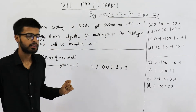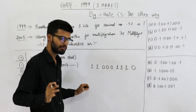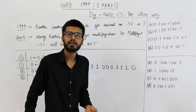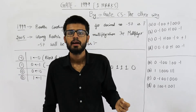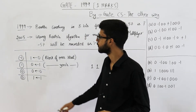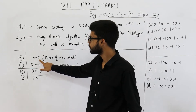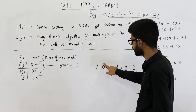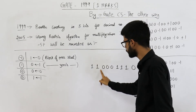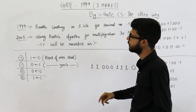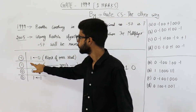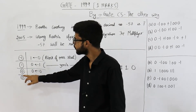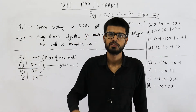Now we need to find the Booth's encoding of this multiplier, which is minus 57. For finding Booth's encoding, you just add a 0 on the right. Now, whenever a block of 1's begins, the encoding will be minus 1, and whenever a block of 0's begins, the encoding will be plus 1. If you are currently on 0 and the next bit is 1, we can be sure that a block of 1's is beginning. You output minus 1 for a block of 1's, and plus 1 for a block of 0's. If there is no change — that means current bit and next bit are the same — you will output 0, meaning no new block is beginning.